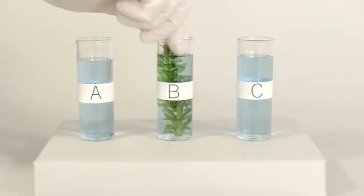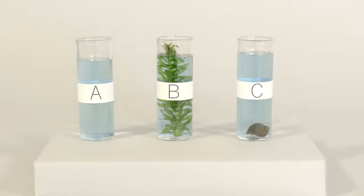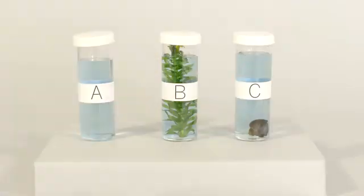Next we'll add an Elodia plant to vial B and a freshwater snail to vial C. Vial A, with no organism, will be the control group.